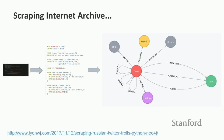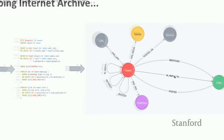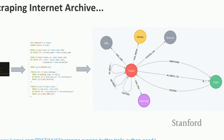Our graph model looked like this: we have tweet nodes, we extract the user into another node, a user posts a tweet, that tweet can mention a user, we extract the hashtags as well as the source — the application used to post the tweet — and URLs that were shared.